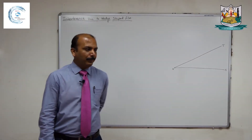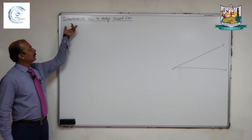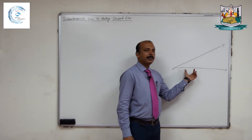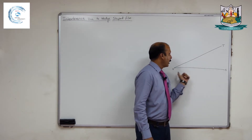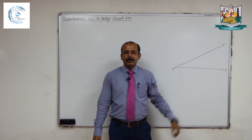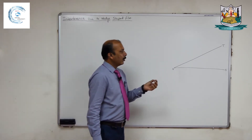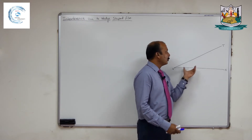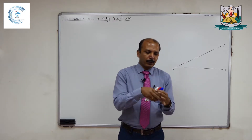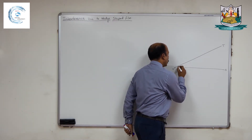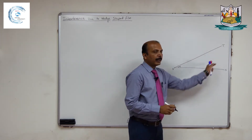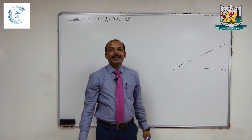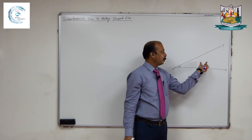Good morning, dear students. Today we are going to discuss interference due to wedge-shaped film. If we consider two glass plates OS and OT, and a human hair, thin paper, or thin thread is introduced between these two glass plates, then one side of the glass plates will incline at a certain angle — that angle is called the wedge angle. The film formed by the two glass plates and the hair is called a wedge-shaped film.